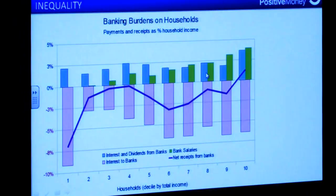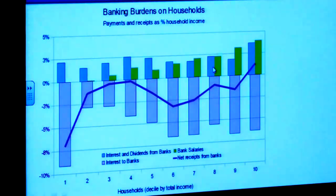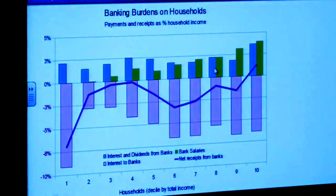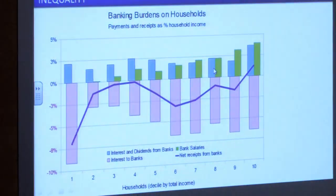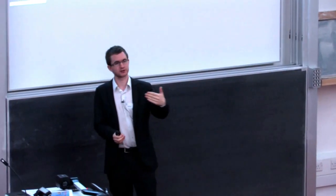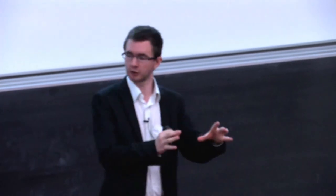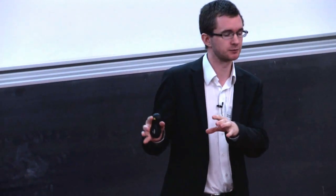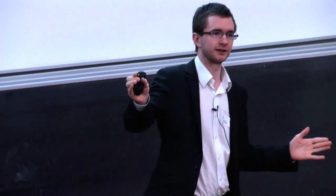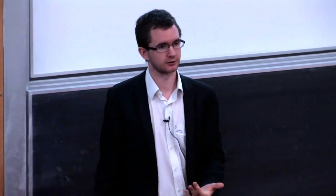So inequality. I'm just going to show this very briefly. Actually, this is a bit of a complex chart, but essentially that purple line that you see there shows whether people are paying more in interest than they're actually receiving from their savings. And what you'll see is that the bottom 90% of the population, by their wealth and their income, is paying more in interest to the banks than they're actually receiving on their savings and other investments. So what this is, is a net distribution of income and wealth from the bottom 90% to that top 10%.